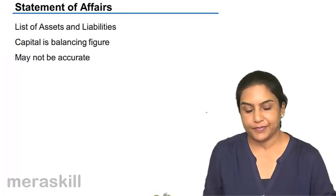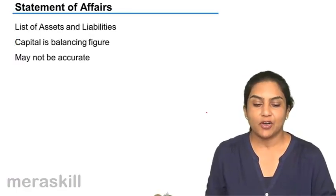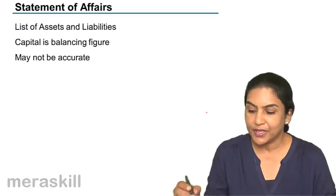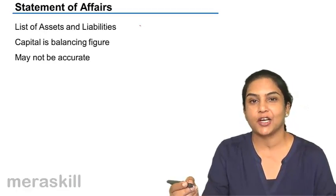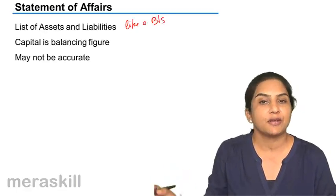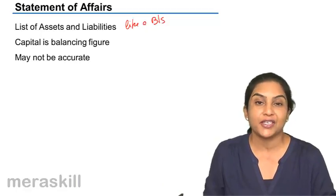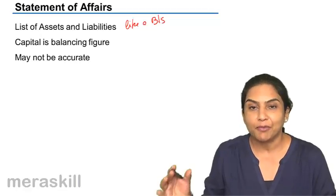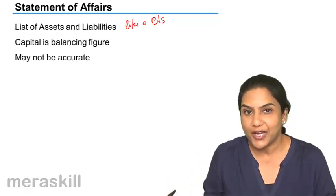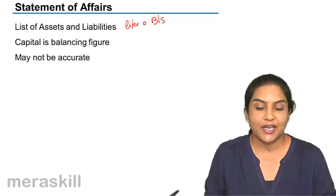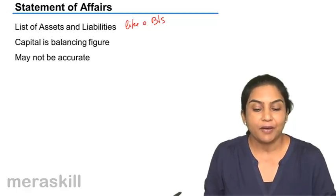What is a statement of affairs? A statement of affairs is a list of assets and liabilities, similar to a balance sheet. We call it a statement of affairs and not a balance sheet because we are not very sure about the value of the figures — some of the values assigned to assets could be just estimates.